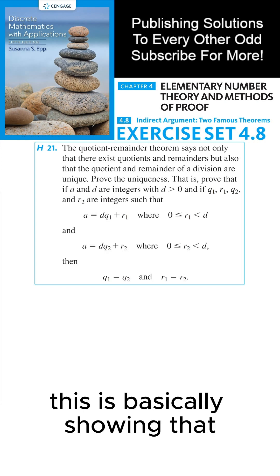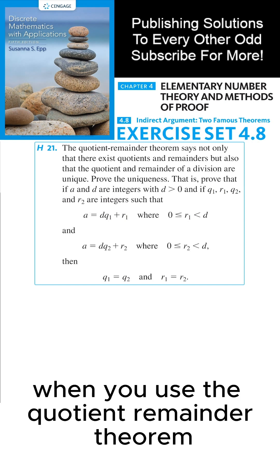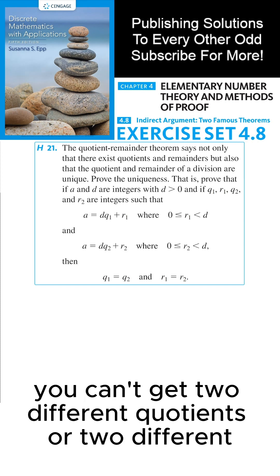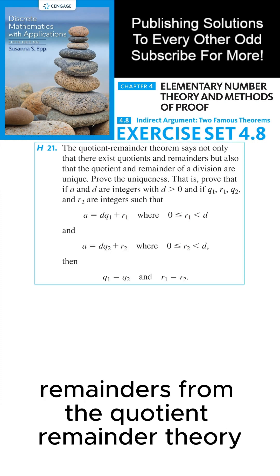This is basically showing that when you use the quotient-remainder theorem, you get a unique quotient and a unique remainder. You can't get two different quotients or two different remainders from the quotient-remainder theorem.